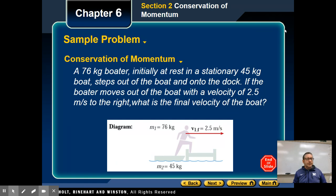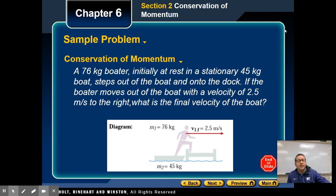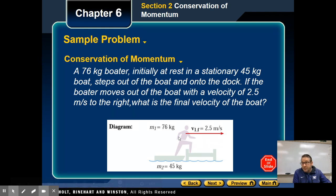Let's look at a practice problem. We have a 76-kilogram boater initially at rest in a stationary 45-kilogram boat who steps out of the boat and onto the dock. If the boater moves out of the boat with a velocity of 2.5 meters per second to the right, what is the final velocity of the boat? We know the mass of the person, the mass of the boat, how fast the individual got off the boat, and that they were both initially stationary.